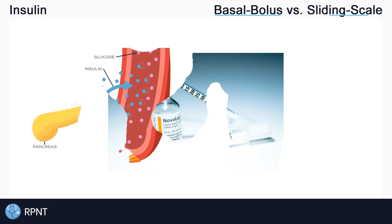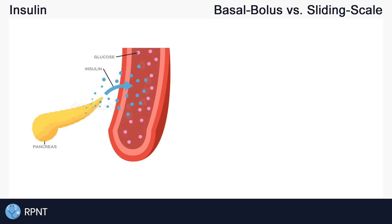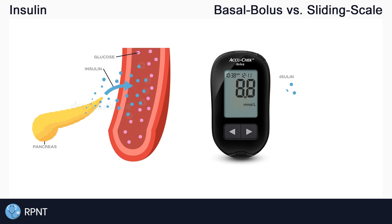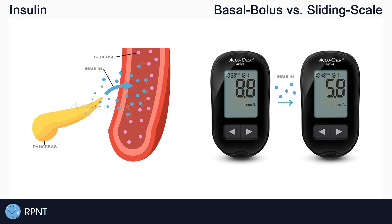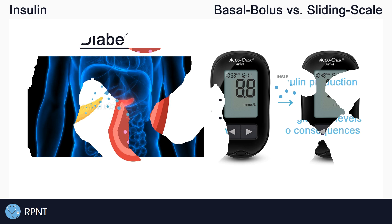Insulin is a hormone, normally secreted by the pancreas, that allows the body to use glucose or sugar for energy. Insulin is secreted into the blood and it basically tells your body's cells to open up and allow the glucose to enter the cells so that the cells can use the glucose for energy. So you can think of insulin as a hormone that lowers blood glucose levels because it helps to use up the glucose.